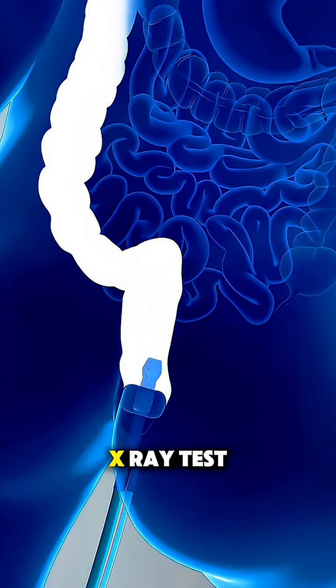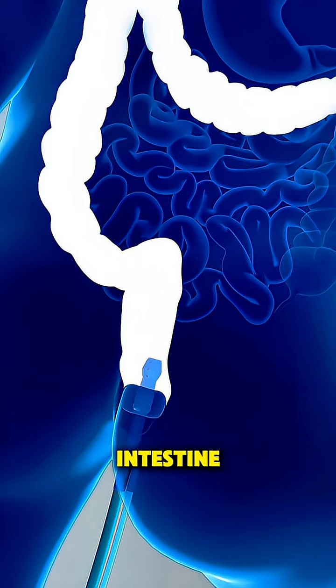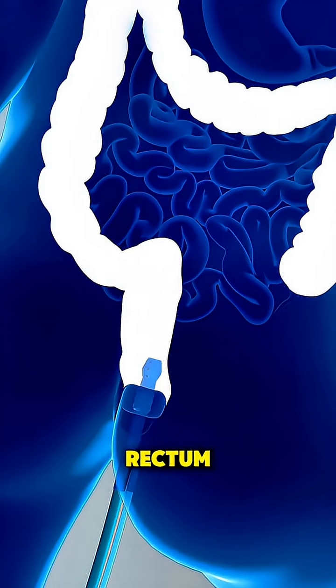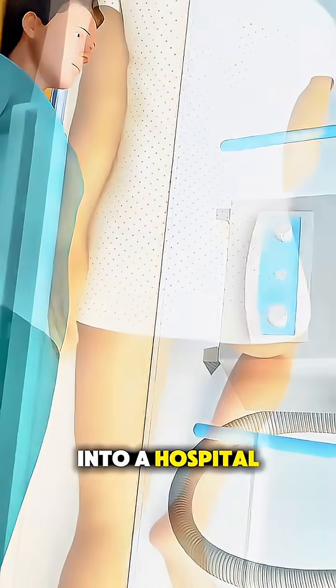A barium enema is a special x-ray test used to look at your large intestine, the colon and rectum. First, the patient changes into a hospital gown and lies on an x-ray table.